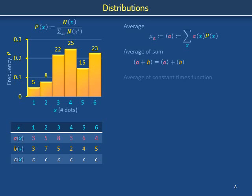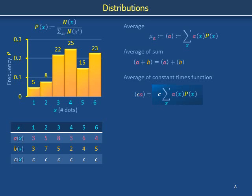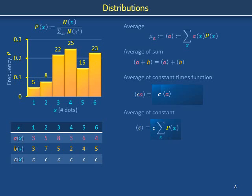The second identity involves the average of a constant times a function. The average of c times a is calculated by placing the product c(x) and a(x) inside the sum weighted by p(x). For each value of x, c(x) always returns the constant c. A constant factor multiplying each term can be factored outside to the left, leaving only functions a and p in the sum, which is thus the average of a. When calculating the average of a constant times a function, the constant can be factored out. As our last identity on this page, the average of a constant c is simply c itself, since the probability distribution is normalized to add up to 1.